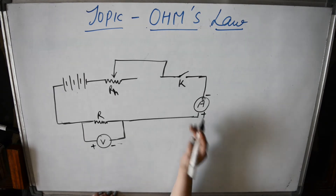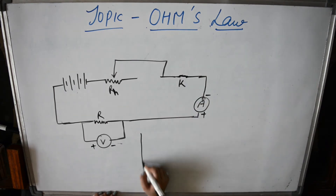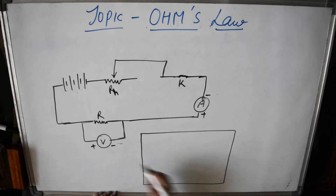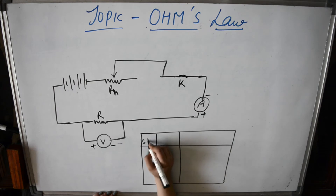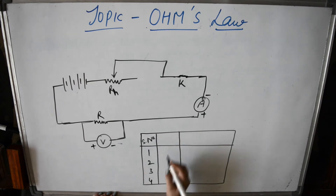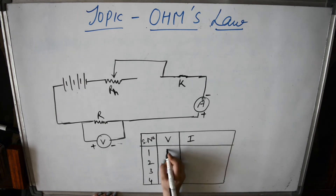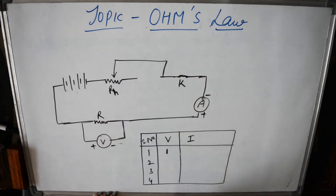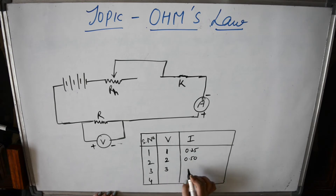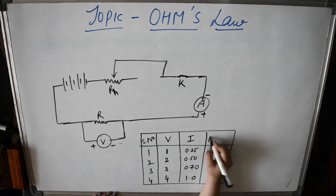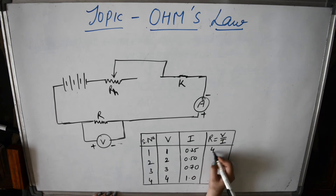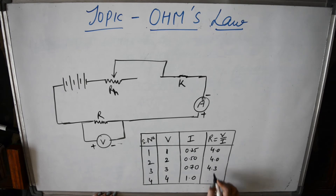After setting up this circuit, we close the key and note down the voltmeter and ammeter readings. We take multiple readings: for example, voltage 1V gives current 0.25A; voltage 2V gives 0.50A; voltage 3V gives 0.75A; and voltage 4V gives nearly 1A. Then we calculate R which equals V upon I — and we get 4, again 4, again 4, again 4.